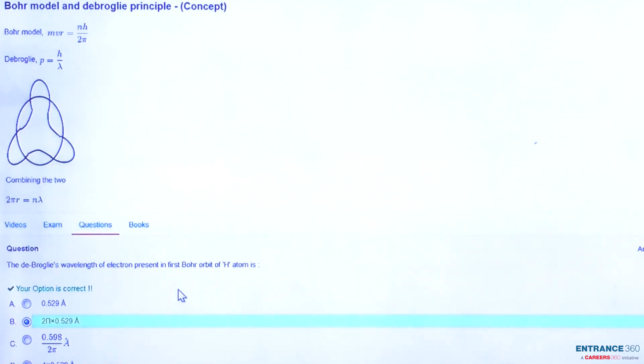So from the given options we can see that B is our correct option, the right one, which is equal to the value of wavelength coming as 2π into 0.529 angstrom.